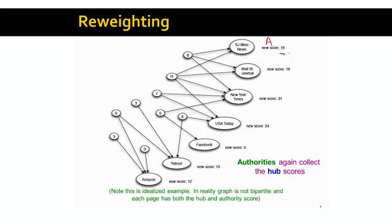Now that we have the new hub scores, we go back and update the authority scores. For example, San Jose Mercury News gets an authority score of nineteen because eight plus eleven equals nineteen. We are pushing hub and authority scores back and forth in this graph. Of course, these scores can grow arbitrarily large, so we keep them normalized. We compute the authorities based on hub scores, then update hub scores based on new authority scores, repeating iteratively.